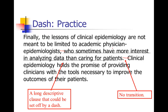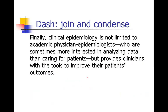There are also several things to fix. We have 'clinical epidemiology' twice — once the sentences are merged, we can drop the second use. The phrase 'are not meant to be limited to' is awkward; we can fix that. 'Holds the promise of providing' can simply become 'provides' — be direct. 'The tools necessary to improve' can drop 'necessary.' And 'the outcomes of their patients' becomes 'patients' outcomes,' saving a couple of words. So we end up with: 'Finally, clinical epidemiology is not limited to academic physician epidemiologists — who are sometimes more interested in analyzing data than caring for patients — but provides clinicians with the tools to improve their patients' outcomes.' That's a lot smoother and gets the information across much more efficiently.